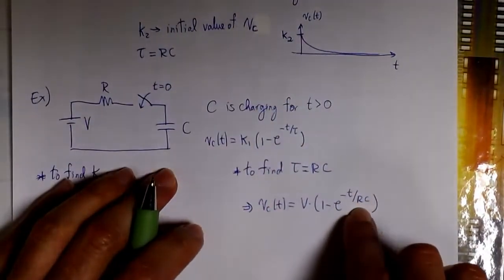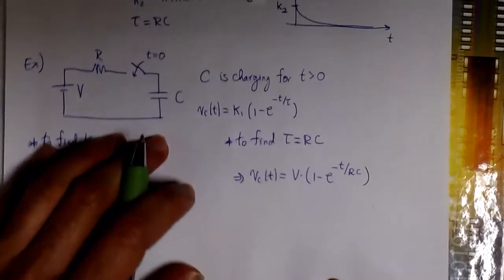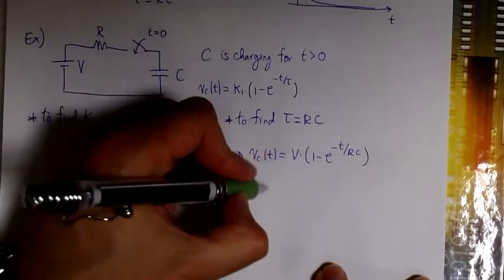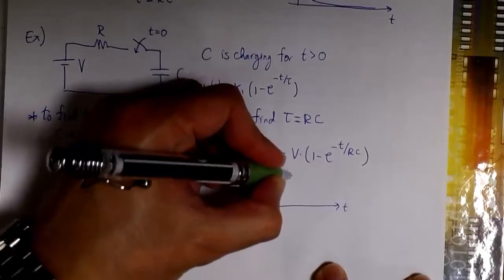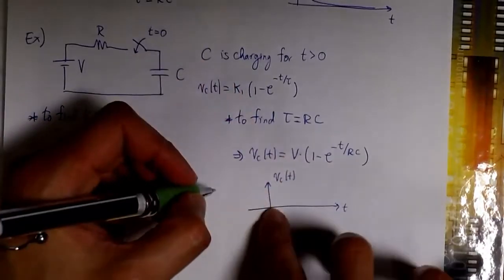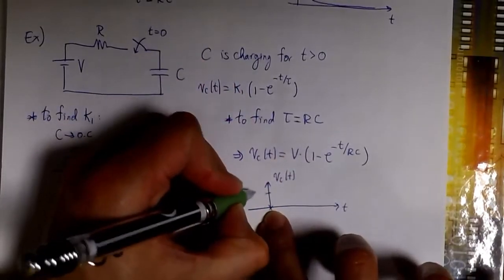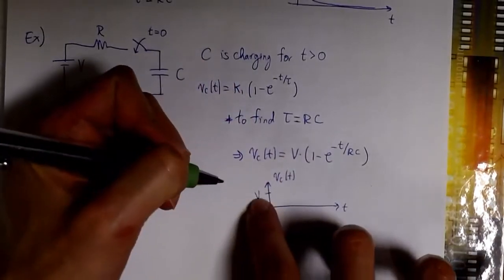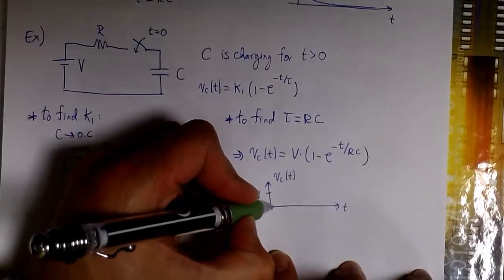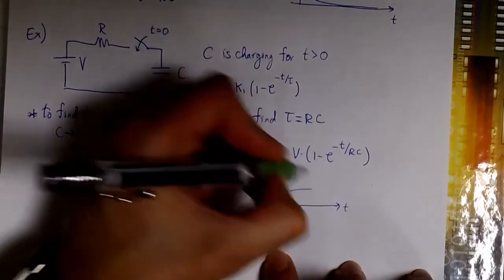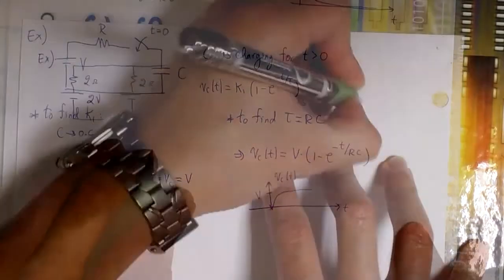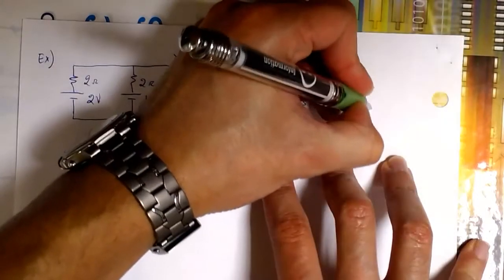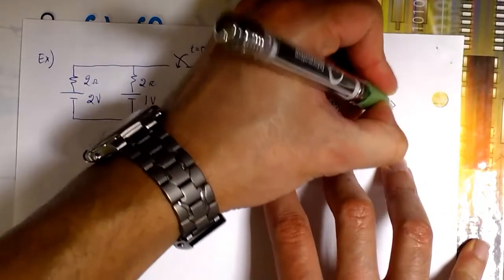If we want to plot this, we have t here and the voltage there. The initial value is 0 — the capacitor is fully discharged — and the final value is V. Now let's consider a more complicated circuit.